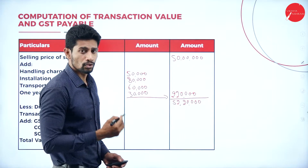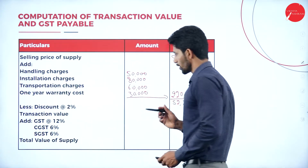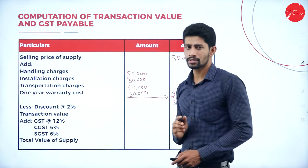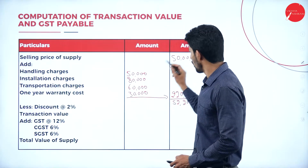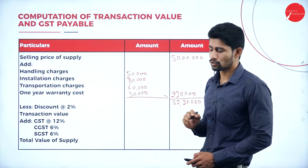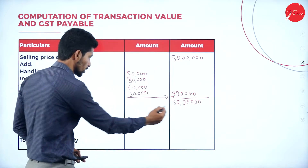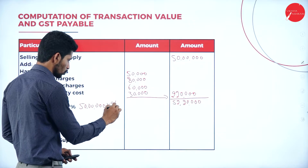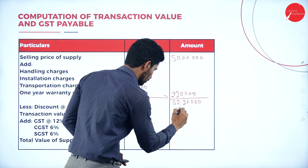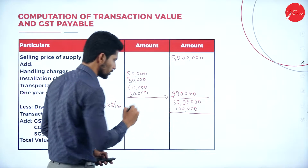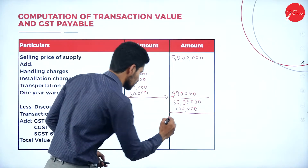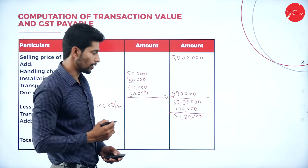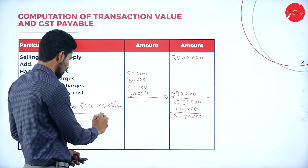Add 2,20,000 with Rs. 50 lakhs — you get Rs. 52,20,000. From this value, we are supposed to deduct the discount. The rate of discount is 2% on the selling price of Rs. 50 lakhs. So 50 lakhs into 2% equals Rs. 1,00,000. Deduct Rs. 1,00,000 from Rs. 52,20,000; the balance is Rs. 51,20,000. This Rs. 51,20,000 is called the transaction value.